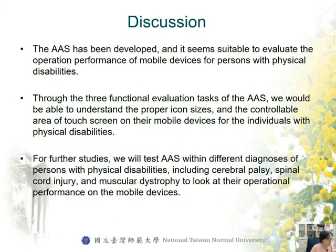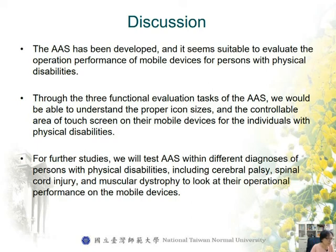In the discussion, this system has been developed and it seems suitable to evaluate the operating performance of mobile devices for persons with physical disabilities. Through the three functional evaluation tasks, we will be able to understand the proper icon size and the controllable area of the touch screen on mobile devices for individuals with physical disabilities. For further study, we will test this system with different diagnoses of persons with physical disabilities, including cerebral palsy, spinal cord injury, and muscular dystrophy, to examine their operational performance on the mobile phone.